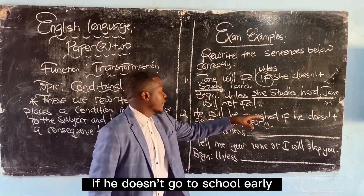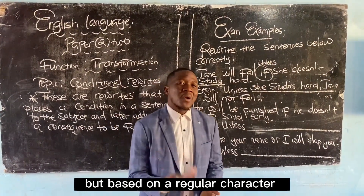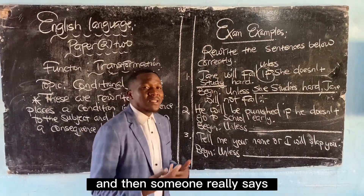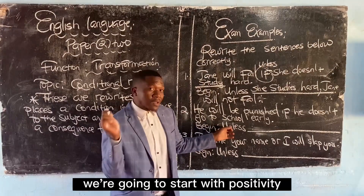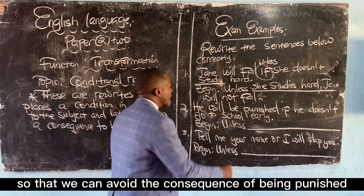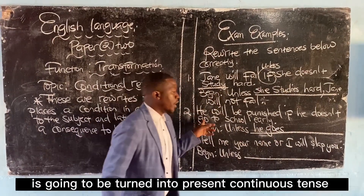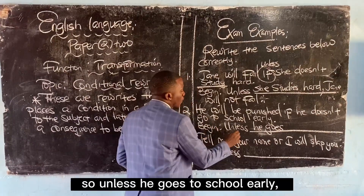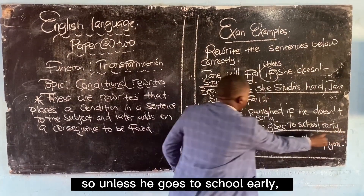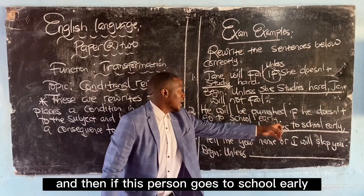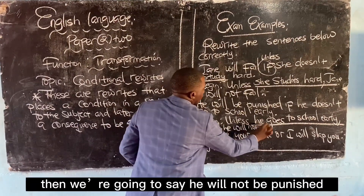Number two: He will be punished if he doesn't go to school early. This does not mean this person is late, but based on a regular character, someone says he will be punished if he doesn't go to school early. Begin with 'unless.' We are going to start with positivity to avoid the consequence of being punished. So: Unless he goes to school early, he will not be punished.